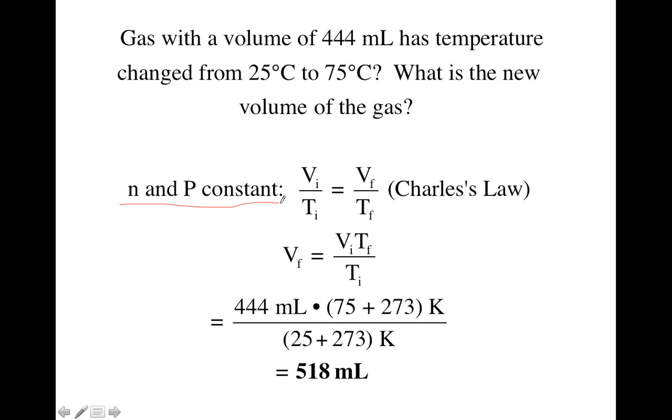So if we drop those out of the general gas law, we get Vi over Ti equals Vf over Tf, which is also known as Charles' Law. So let's take that equation that I just circled and solve for Vf. It equals Vi times Tf over Ti.